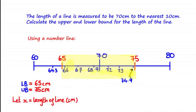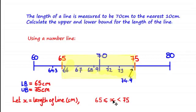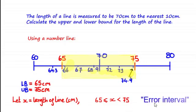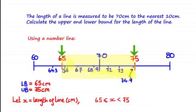If we let x be the length of the line in centimetres, we can express the set of possible values as an inequality: all values greater than or equal to 65 (the lower bound) but strictly less than 75 (the upper bound). The strict inequality shows the length cannot equal 75, yet 75 is still classed as the upper bound. This interval is also called the error interval. Notice the upper and lower bounds are the midpoints between the estimated value and the next values up and down.